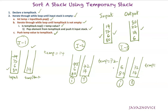In iteration 3, we pop out an element from the input stack and assign it to the temporary variable. We compare: is the top of the temporary stack greater than the temporary variable? Yes. So we pop out the element from the temp stack and push it to the input stack — 72 goes back. We continue: is 14 greater than 6? Yes. So we pop that element and push it to the input stack. Now the temporary stack is empty and we push the temporary variable to temp stack.